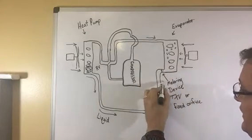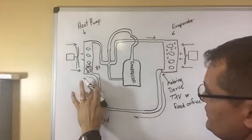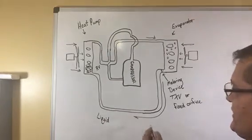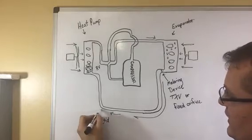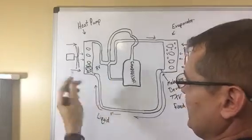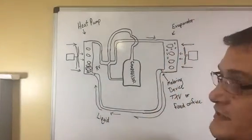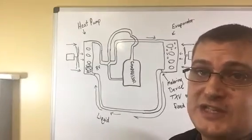So as it condenses to a liquid, it's now traveling this way. So you just reverse the flow of the refrigerant basically. So now it's traveling this way as a liquid. There's normally another metering device on the outdoor unit. It hits that metering device, sprays in there. And as it sprays, it's absorbing heat from the outside air.